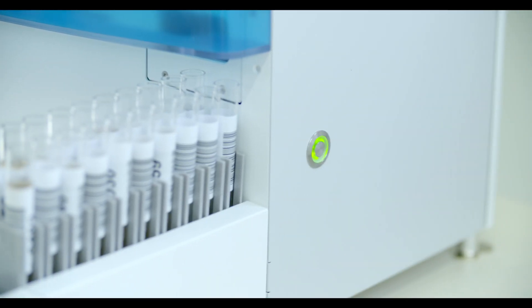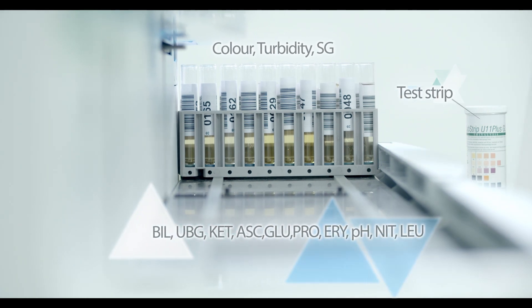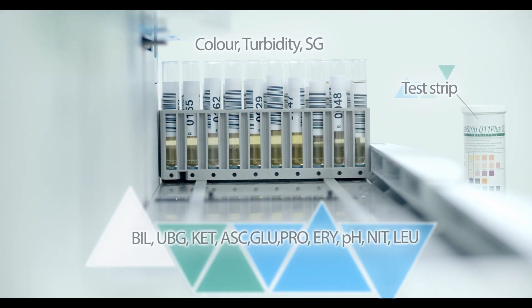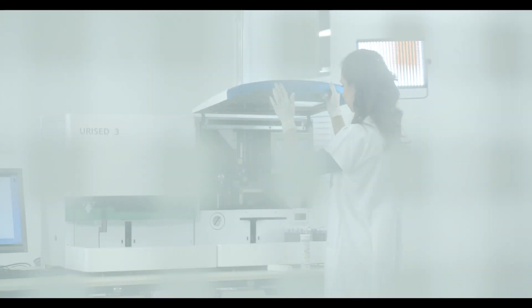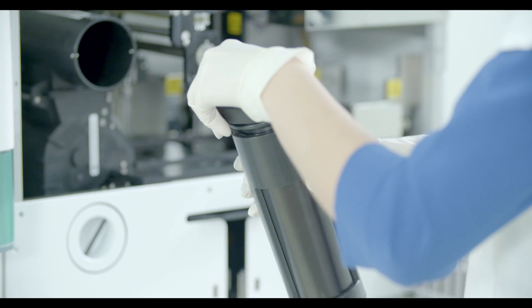Labumat2 is an automated urine chemistry analyzer which evaluates 10 chemical parameters of lab strip U11 plus GL test strip, and three physical parameters are measured by the separate physical measurement cell module.